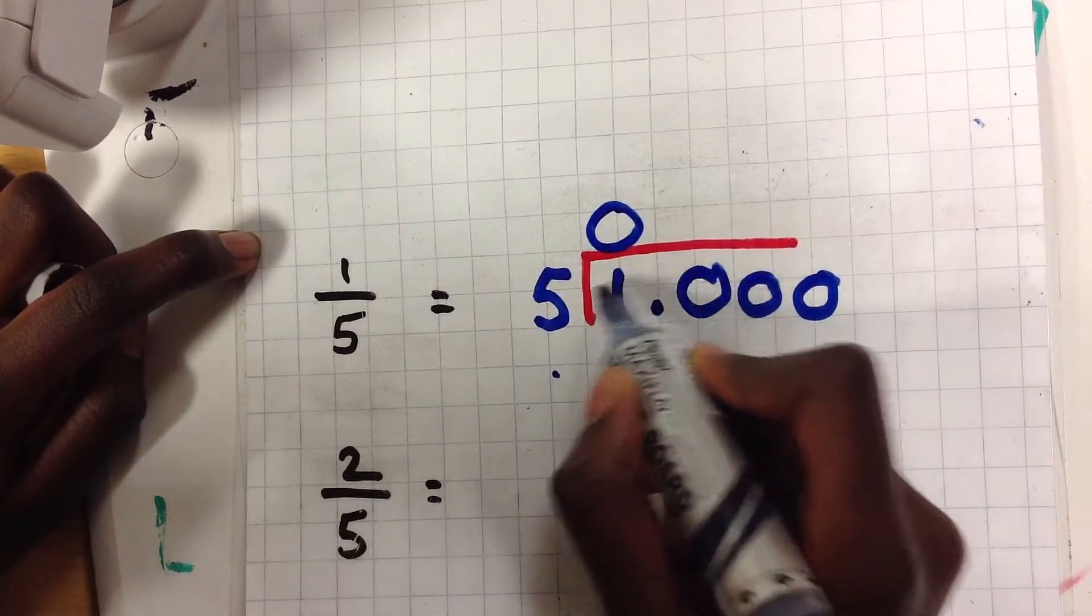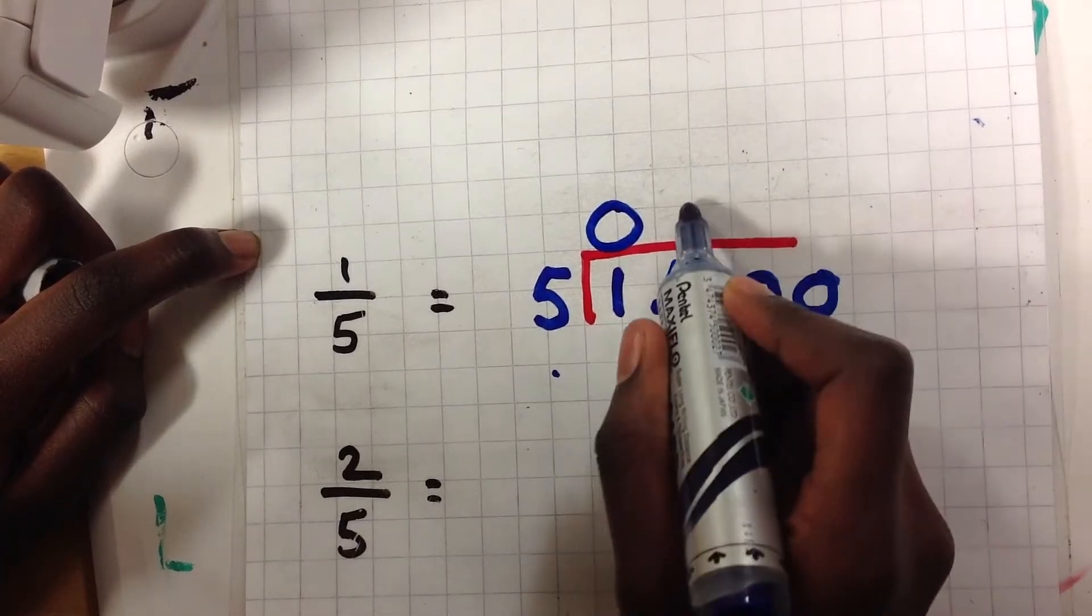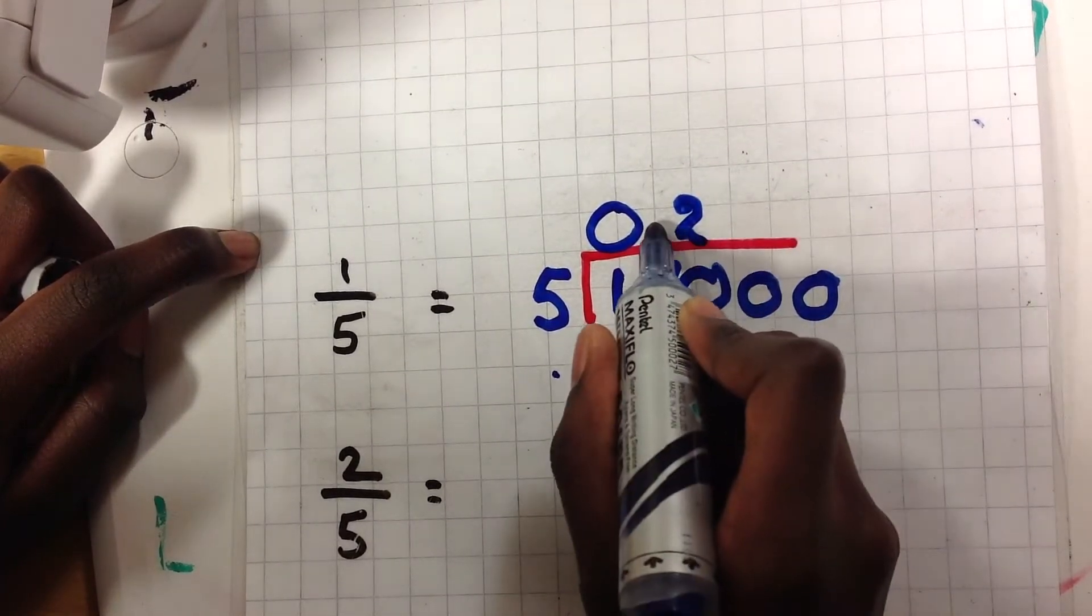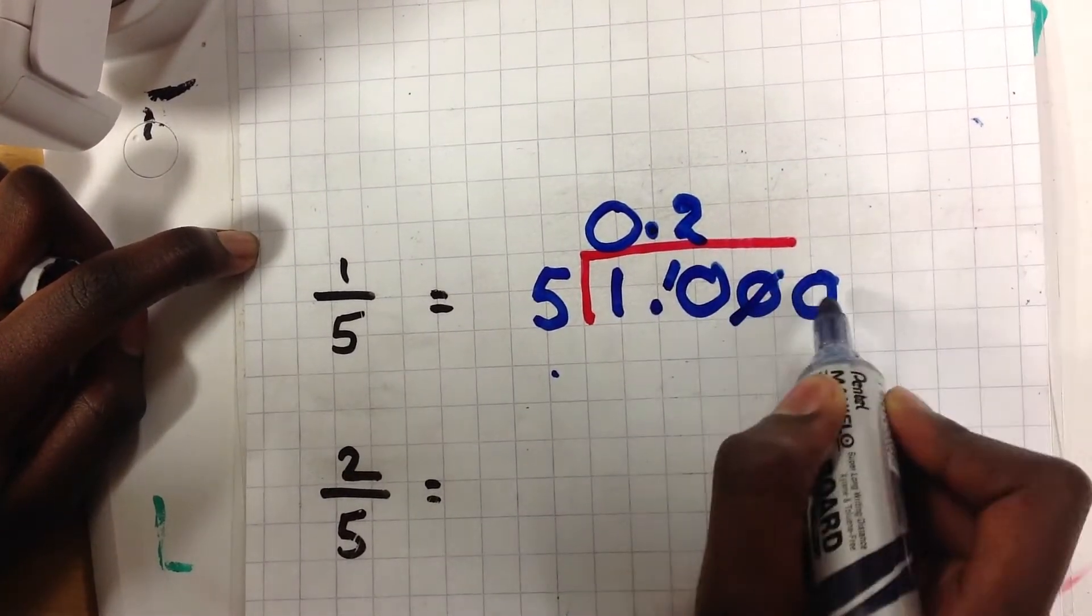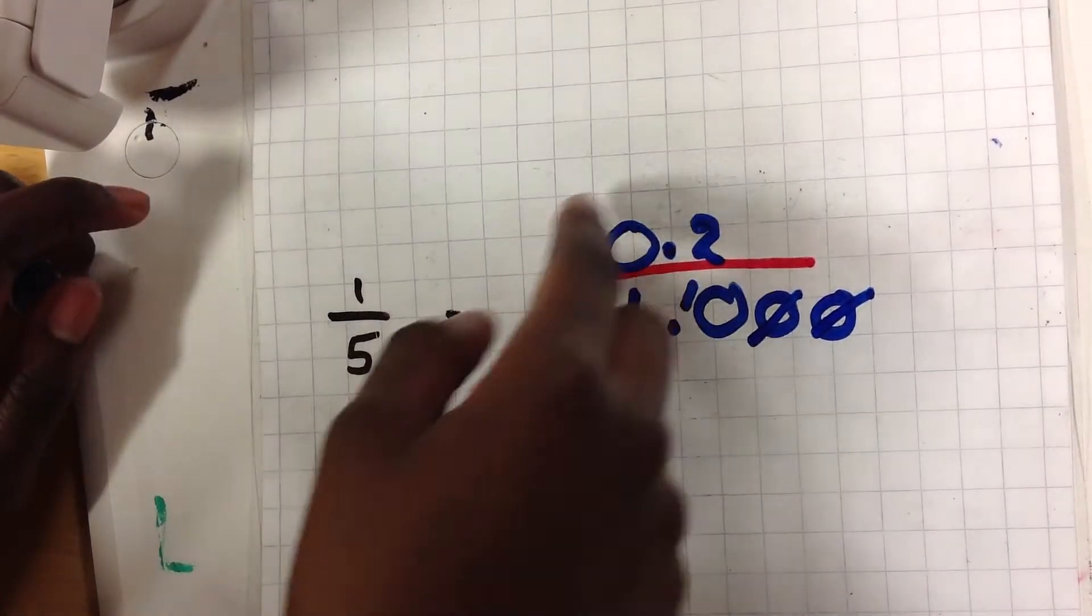How many times does 5 go into 1? 0 remainder, so you bring the 1 back here. How many times does 5 go into 10? 2. Don't forget to bring the decimal point back up. Get rid of those zeros. So your answer is 0.2.